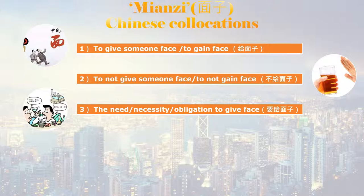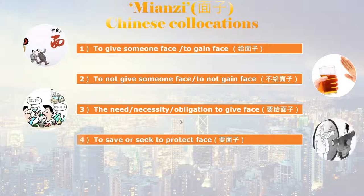For example, if your Chinese manager offers you a drink at a Chinese banquet, you should accept this offer because there's an obligation to give him face. Number four: 要面子, which means to protect, or seek to protect, or to save face. If you confront your colleague for his mistakes, he might deny his wrongdoings because he wants to protect or save face. This reflects Chinese people's underlying desire to be perceived positively in the eyes of others.